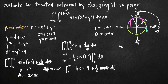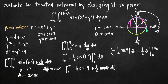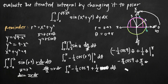Integrating with respect to theta, we get negative one half cosine of 9 times theta plus one half times theta, evaluated from 0 to pi. Plugging in pi gives negative pi over 2 cosine of 9 plus pi over 2. Plugging in 0 gives 0 for both terms. Factoring out pi over 2 from the result, we get pi over 2 times the quantity 1 minus cosine of 9. That is our final answer.